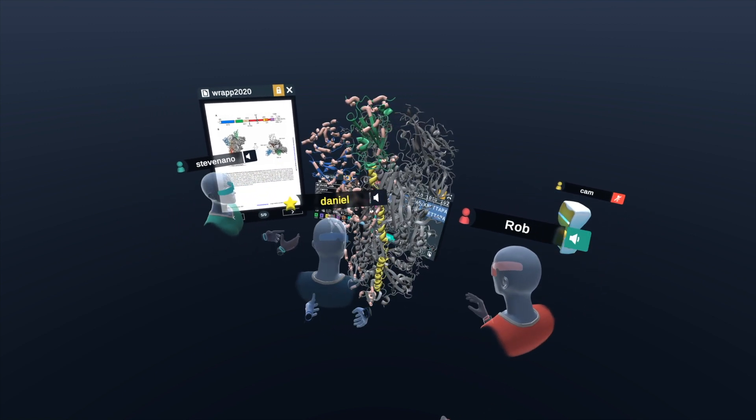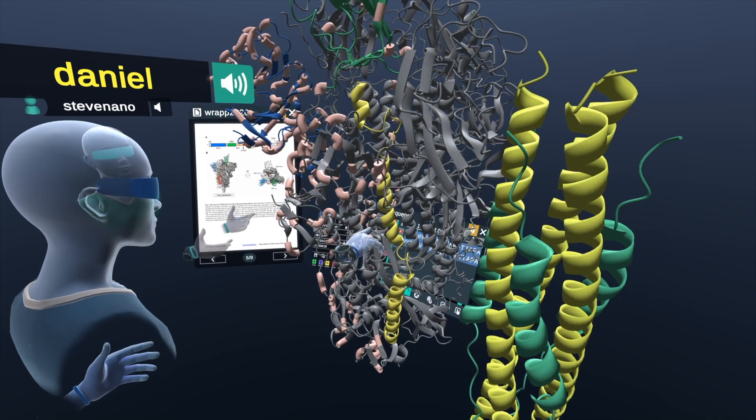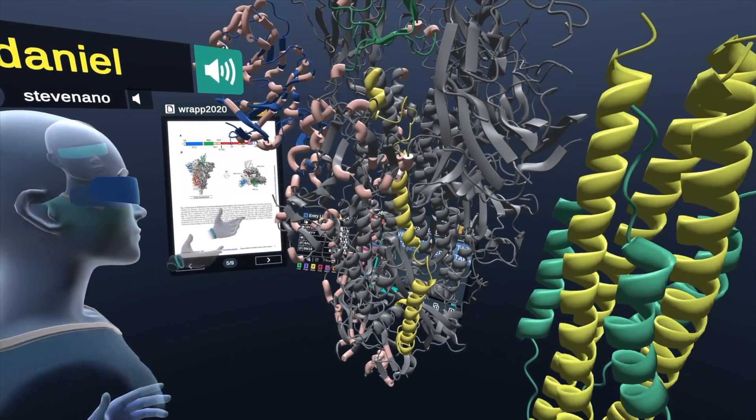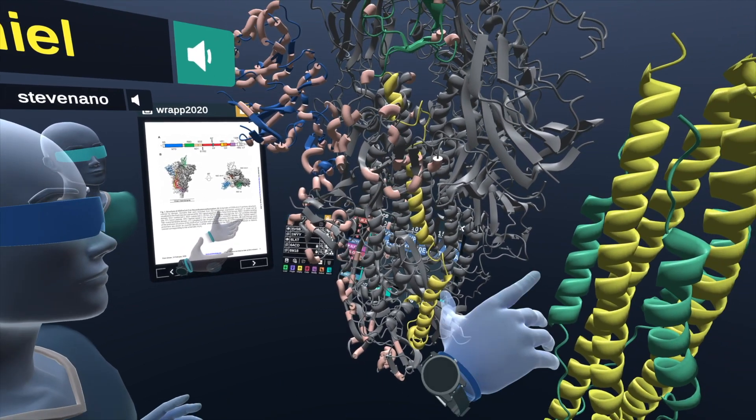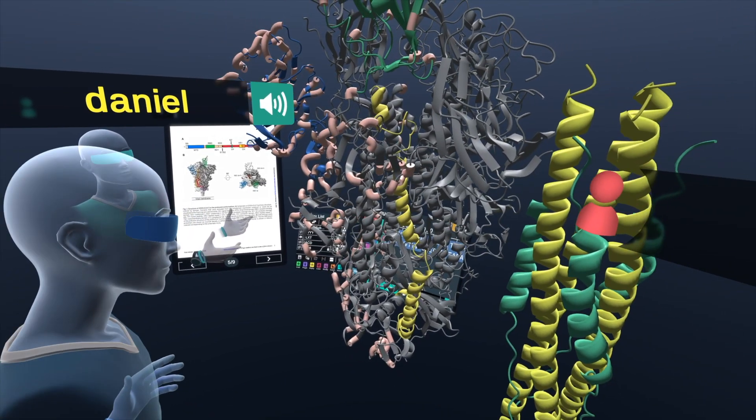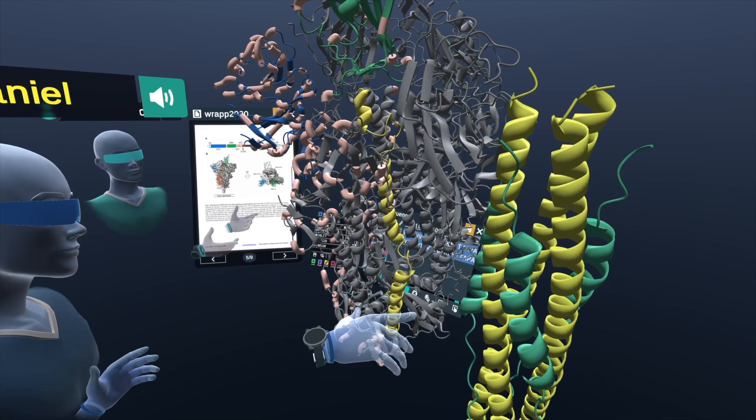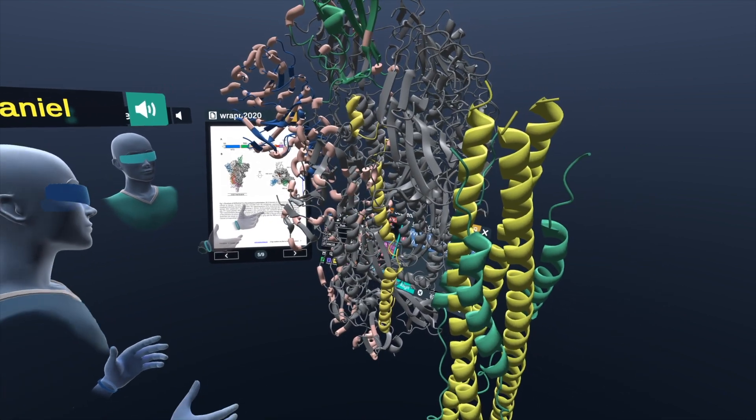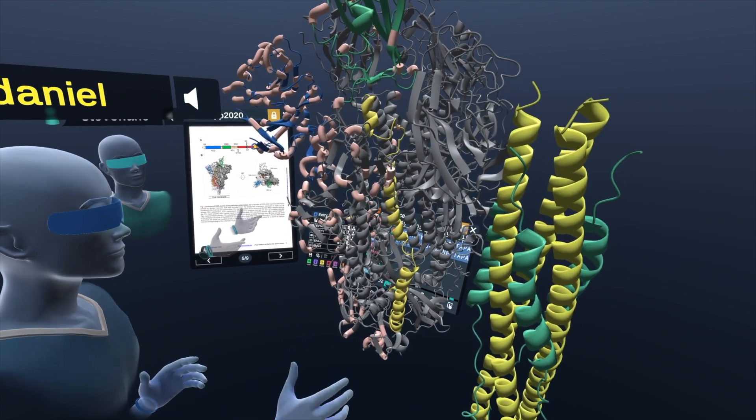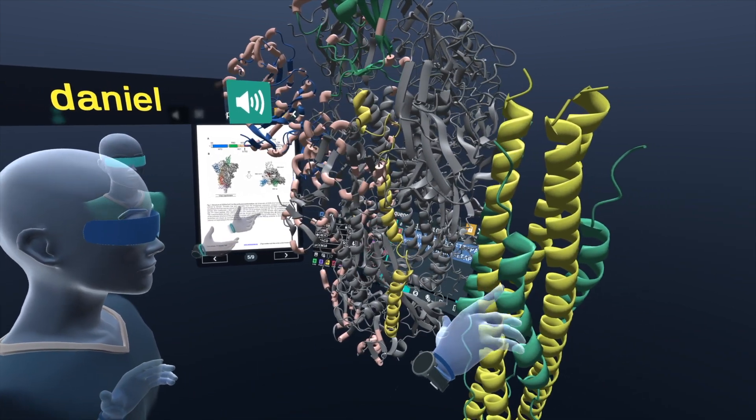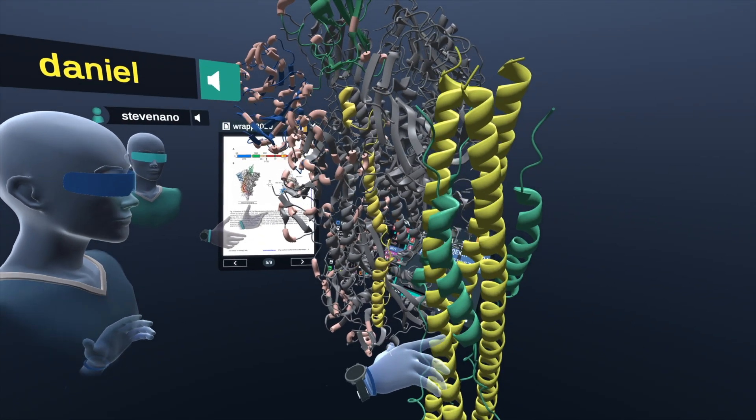Yeah. So in the pre-fusion state, we can see here in yellow is the HR1 domain. And here, this is the post-fusion. And you can see yellow, the same domain. We can see how it's straightened out because it's underwent a large conformational change. And here we have the HR2 domain in green.